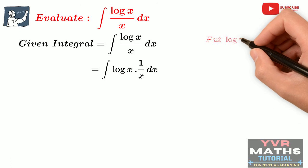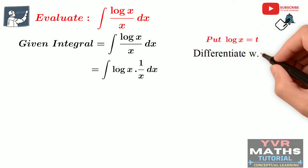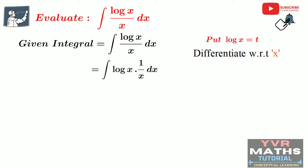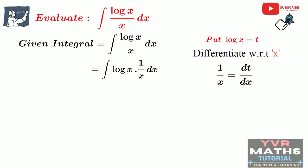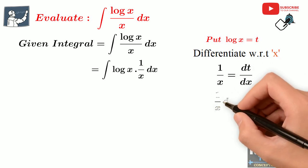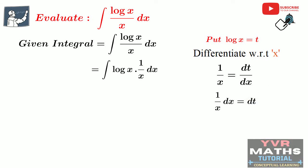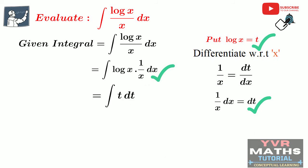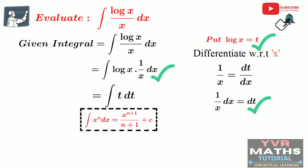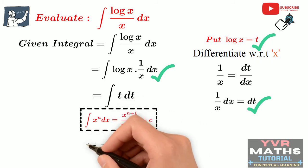So put log x equal to t. Differentiate this with respect to x. The derivative of log x is 1 by x and the derivative of t with respect to x is dt/dx. So the next step is 1 by x = dt/dx. If we cross multiply, 1 by x dx is equal to dt. If we substitute these equations in the integral, we get integral of t dt, because log x is the new variable t and 1 by x dx equals dt. By using the standard integral formula for integral of x dx, we get t² by 2 plus c.